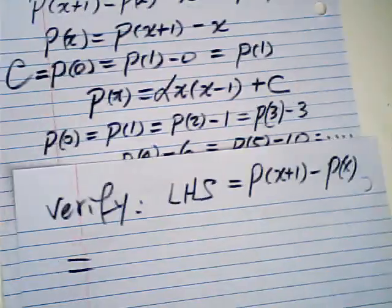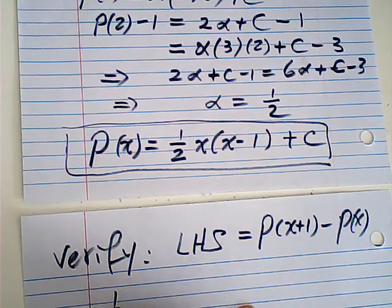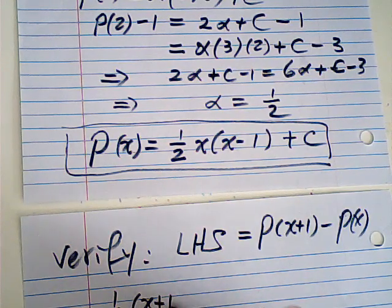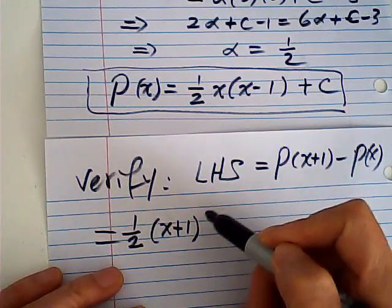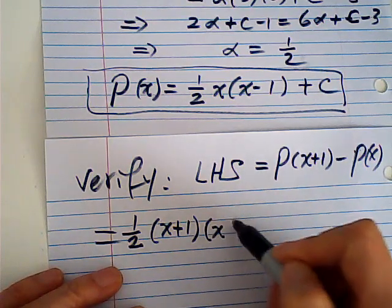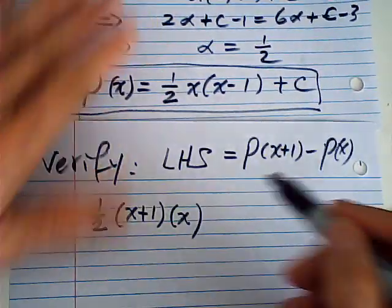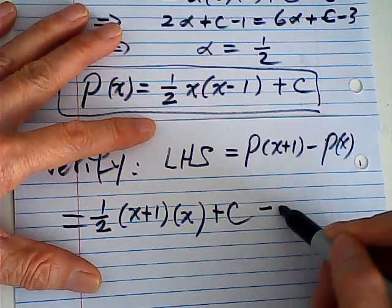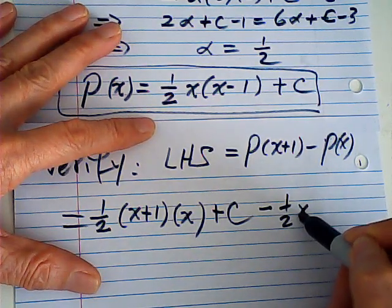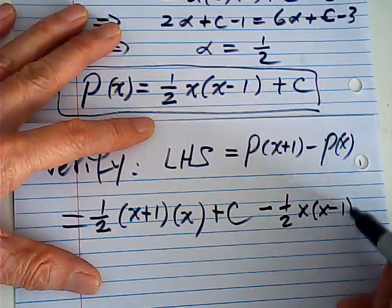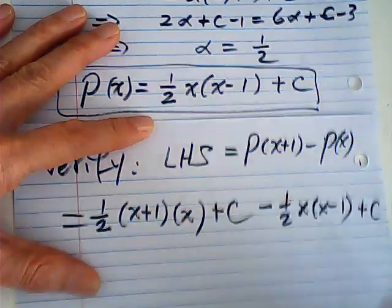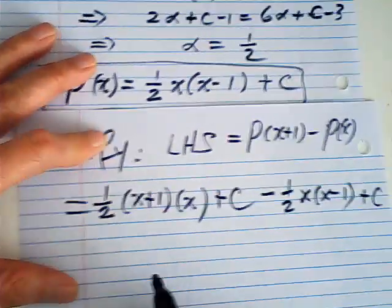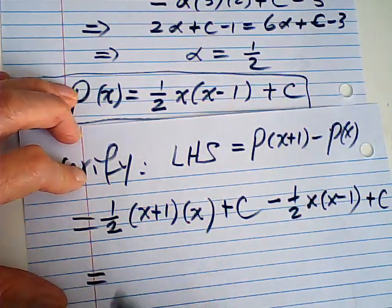So this is equal to, that's my solution, 1/2 · (x+1)(x) plus C minus 1/2 · x(x-1) plus C. That's the left-hand side of the given equation.